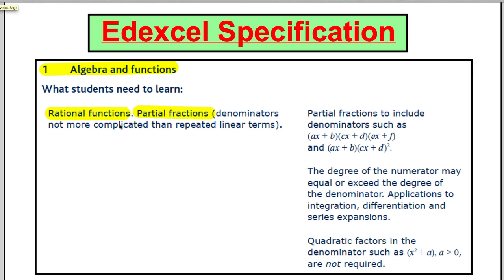Our specification says we deal with rational functions and partial fractions. We've done a bit of that in the previous video, and it says here partial fractions to include denominators such as (ax + b), (cx + d), and (ex + f). So we've done where there are two, now we're doing where there are three and they're all different.